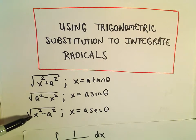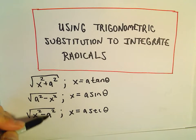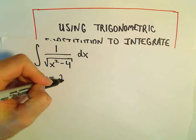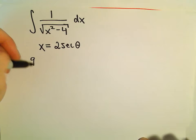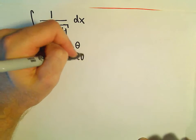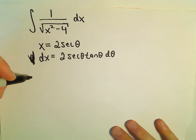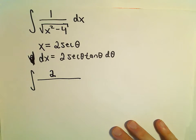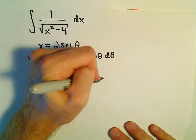Notice we have a variable squared minus a number squared. When we have that form, we use x equals that number times secant theta. We can think of 4 as 2 squared, so we're going to let x equal 2 secant theta. Then dx is 2 secant theta tangent theta d theta, and we'll put that in the numerator.